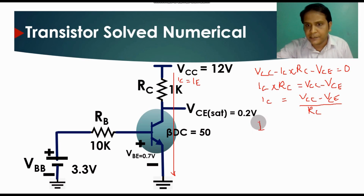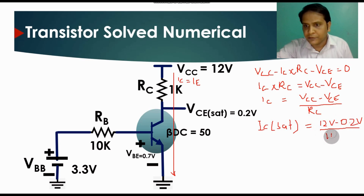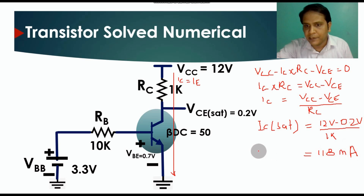The saturated collector current IC(sat) equals VCC minus VCE(sat) divided by RC. Substituting values: VCC equals 12 volt, VCE(sat) equals 0.2 volt, RC equals 1k. Solving this gives IC(sat) equals 11.8 milliampere. This is the maximum saturation current flowing through this transistor.